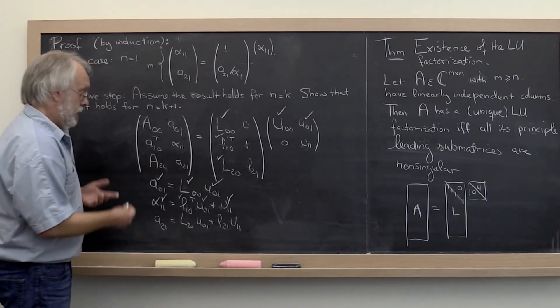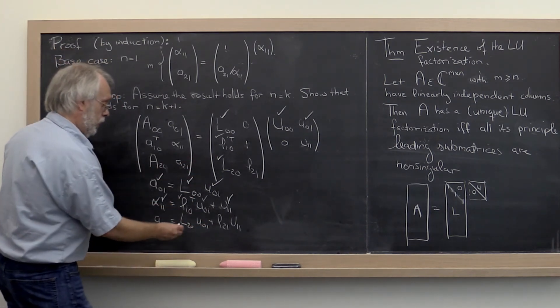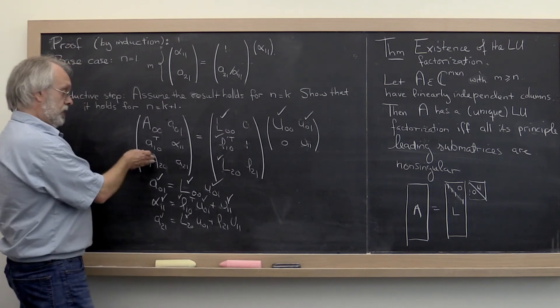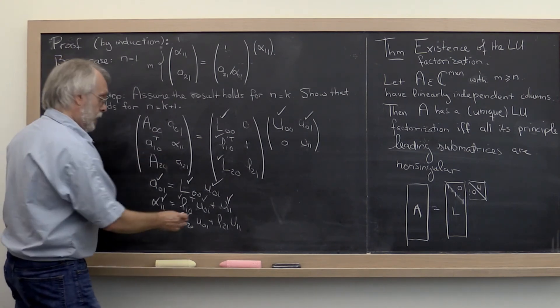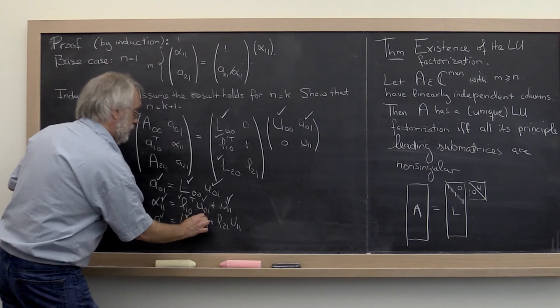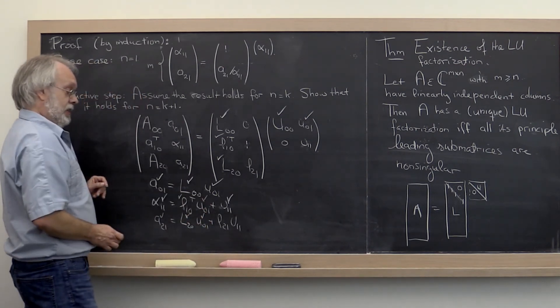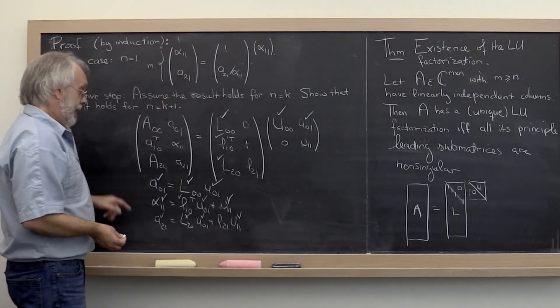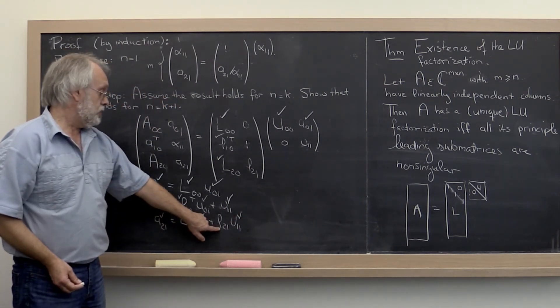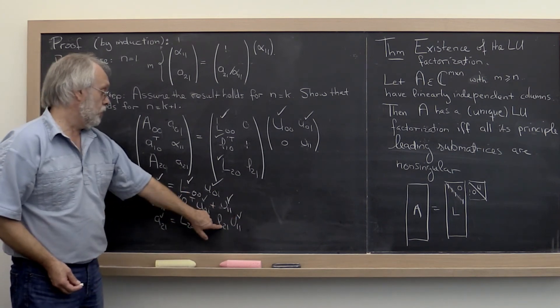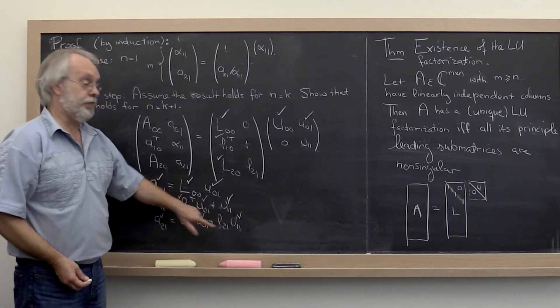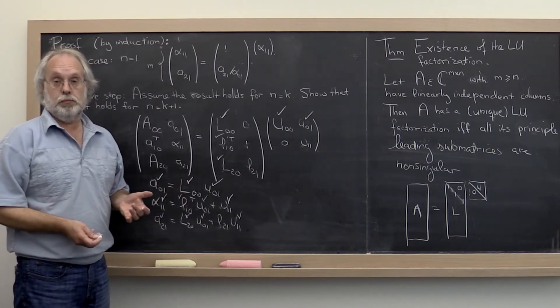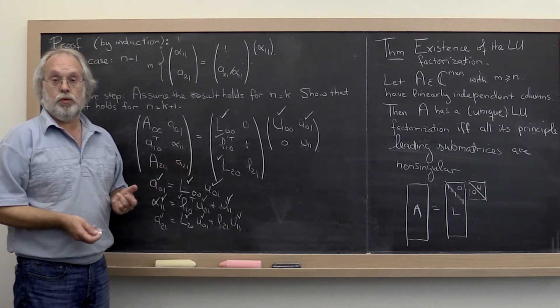Then we move on. By this point, we know what L20 is because it's sitting over here. We know what A21 is because it's part of matrix A. We know what U01 is because that was already computed. We know what U11 is and we know it's non-zero. And that leaves us only with L21. And if we now just solve all of this for L21, which is a unique formula for computing it, then we know what L21 is and that it is uniquely determined. And we're done with the inductive step.